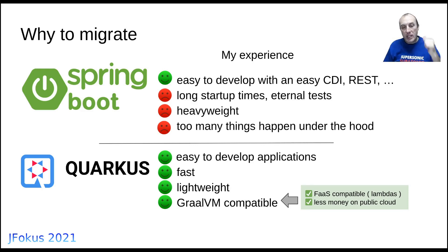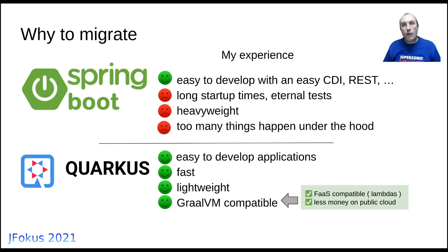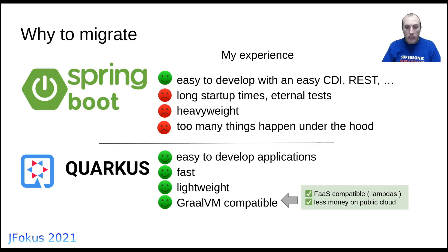Quarkus is easy to develop applications with, it's fast, and it's lightweight — which is something we care a lot about in production. It's also GraalVM-compatible, which opens options previously only possible with Python or Node.js scripts — lambdas, serverless, and so on. So I decided to start doing this migration and feel the pain.